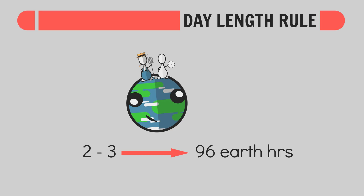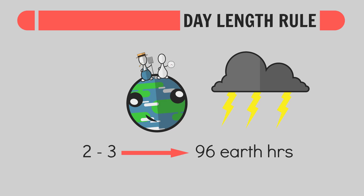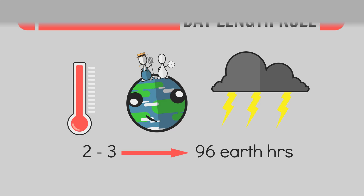Imagine how cool it would be to live on a planet with a 2-hour day or a 96-hour day. Actually, it would suck. The further we stray from Earth-like spins, the more extreme the weather and temperature swings will become, so try to keep everything relatively Earth-like.